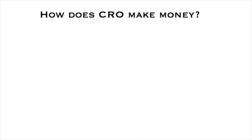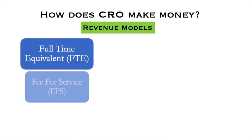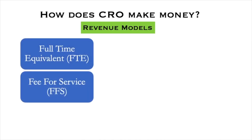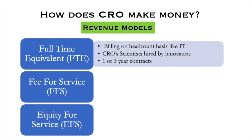Now let's look at how CROs make money. Their revenue models come in three ways. First, Full-Time Equivalent (FTE). Second, Fee-for-Service (FFS). Third, Equity-for-Service (EFS). The Full-Time Equivalent model, which is generally the most popular, involves billing on a headcount basis — similar to an IT company like Infosys or TCS.